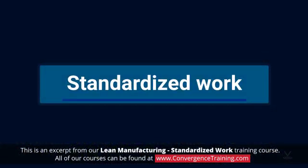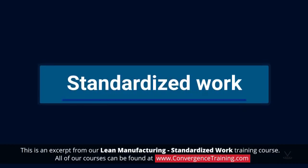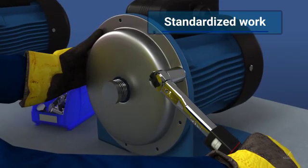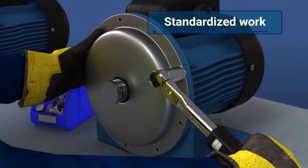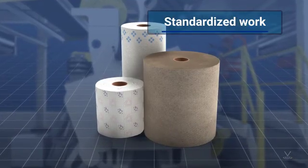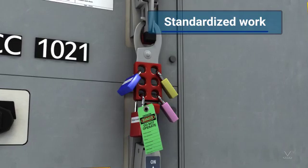Standardized work, however, can be defined as having personnel performing the tasks in the same way, all the time, eliminating ambiguity and inconsistency within the process. Examples of standardized work include specific task procedures like how to install a bolt, line setup, changeover processes, and safety procedures like lockout/tagout.